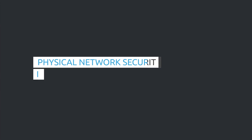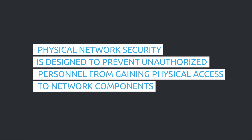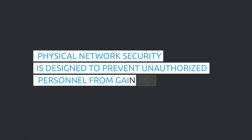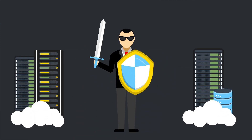Physical network security is designed to prevent unauthorized personnel from gaining physical access to network components such as network cabinets, routers, switches, and firewalls within those cabinets. Controlled access such as locks, biometric authentication, and other devices is essential in any organization.